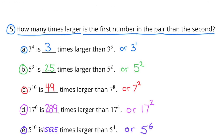D: 17 to the power of 6 is how many times larger than 17 to the power of 4? 17 to the power of 6 is 289 times larger than 17 to the power of 4, which is also 17 to the power of 2 times larger than 17 to the power of 4. E: 5 to the power of 10 is how many times larger than 5 to the power of 4? 5 to the power of 10 is 15,625, or 5 to the power of 6, times larger than 5 to the power of 4.